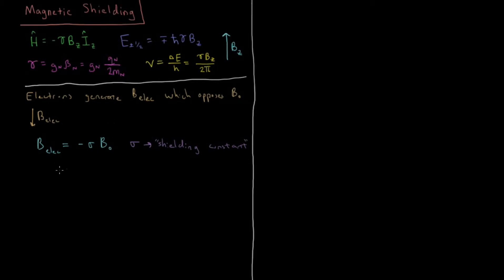This shielding constant is typically on the order of about ten to the minus fifth. So it will be on the order of one part per hundred thousand relative to the external magnetic field.